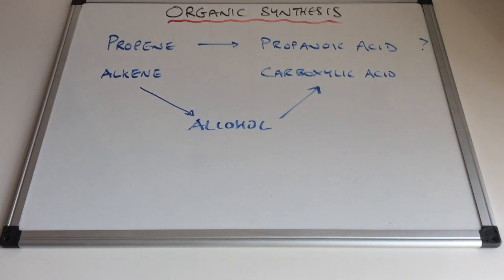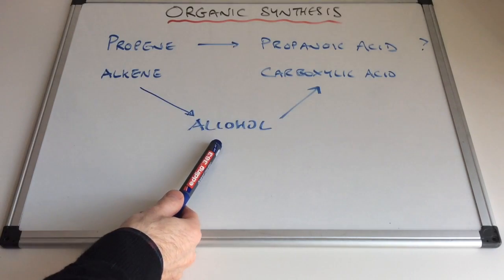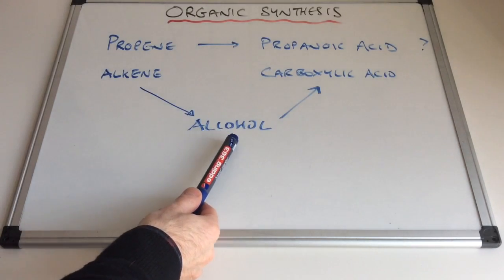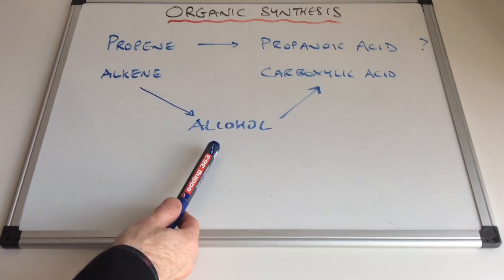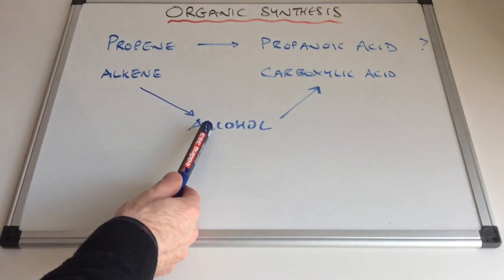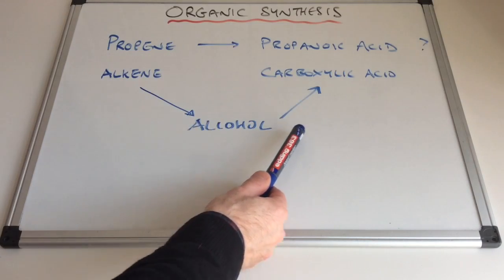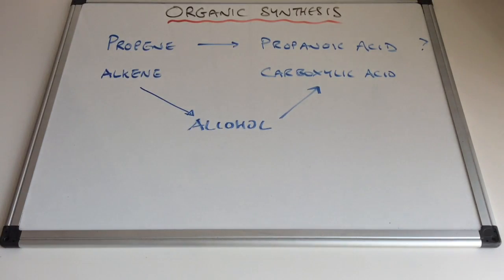The alcohol, because it's not the final product, would be classed as an intermediate. The next thing you need to think about is how you would do each conversion. Think about reagents and conditions now.